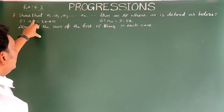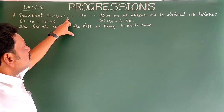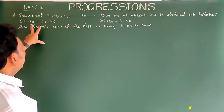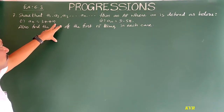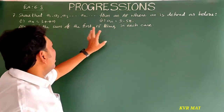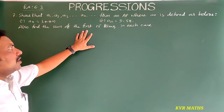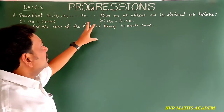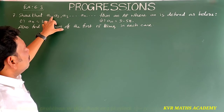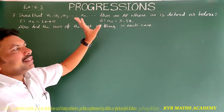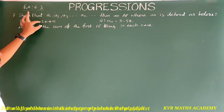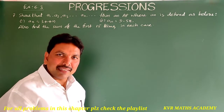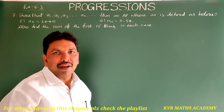This is the 7th question. Show that A1, A2, A3, so on, An form an AP where An is defined as below. That is, An is equal to 3 plus 4n, and An is equal to 9 minus 5n. Also find the sum of the first 15 terms in each case. Here, 2 cases have been given. We have to show that A1, A2, A3, so on, An forms an AP. In the first case, An is equal to 3 plus 4n, and in the second case, An is equal to 9 minus 5n.